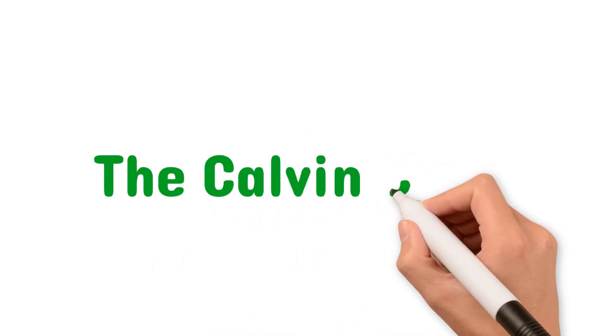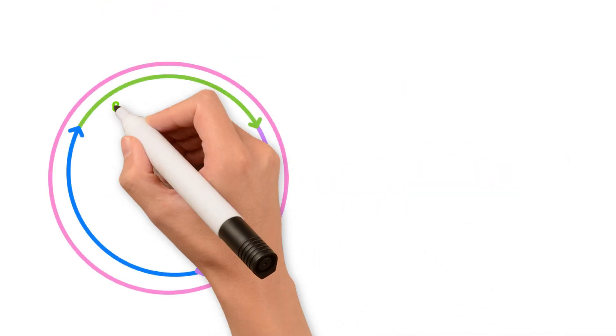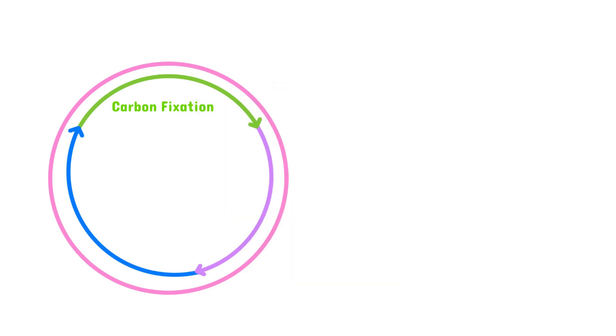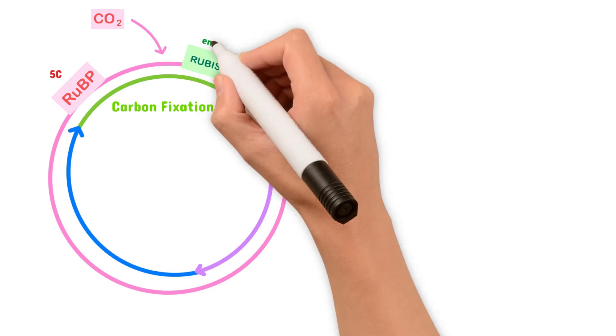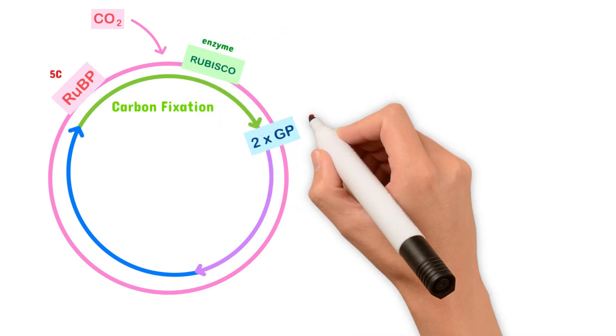So let's analyze the Calvin cycle. The Calvin cycle can be split into three stages. The first stage is known as carbon fixation. In this stage, a compound called RUBP, which has five carbons, combines with CO2 from the environment, and they react together with the help of an enzyme called rubisco to make two compounds of GP, which have three carbons each.